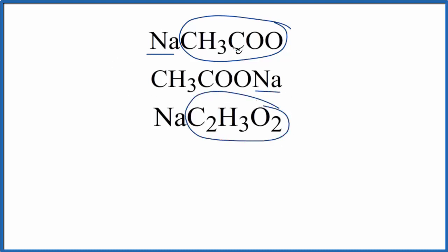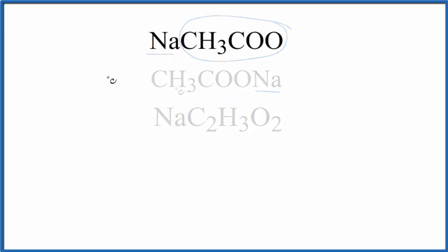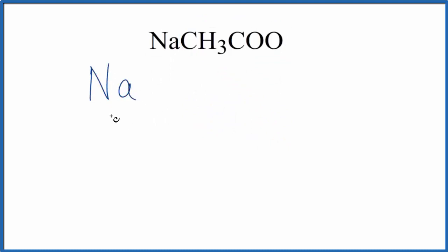You could also write the acetate ion like this. These here are the same thing, it's all the same thing just arranged a little bit differently. So let's find the number of atoms in sodium acetate. First we'll write the element symbols. We have Na, that's our sodium, and then we have carbon, hydrogen, and oxygen.